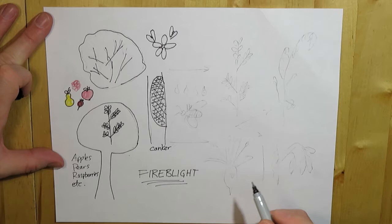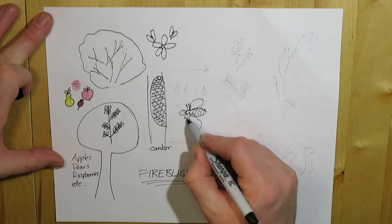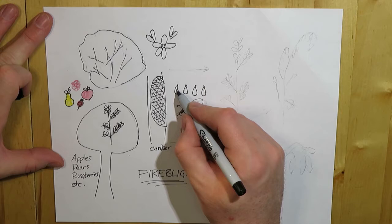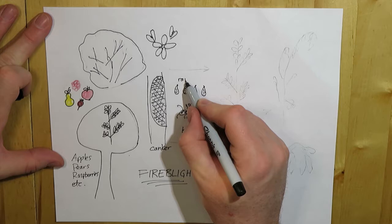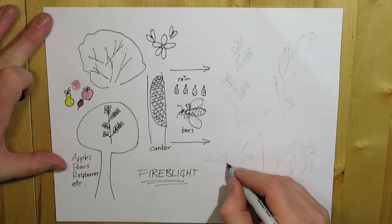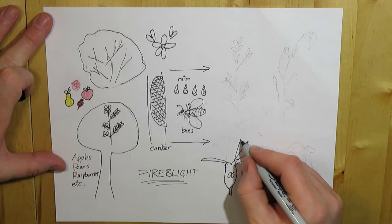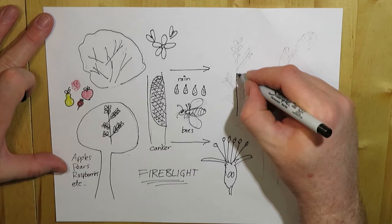When bees or other pollinators are visiting the plant to pollinate, they pick up the fire blight pathogen and can move it during flowering. It can also move with rain and splash, or other ways — even mechanically by humans. As the pollinators visit, they often introduce it into the flowers and growing points.